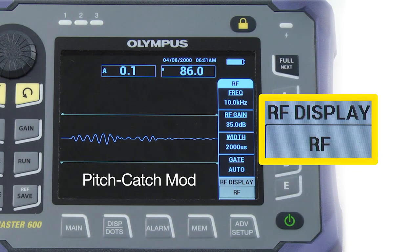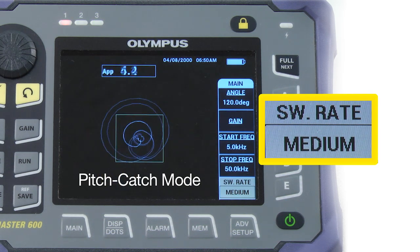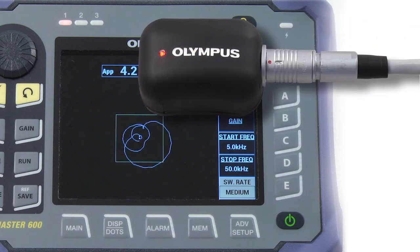The pitch catch mode of the Bondmaster 600 subdivides in RF, impulse and swept methods. All methods can be used with the same probe.